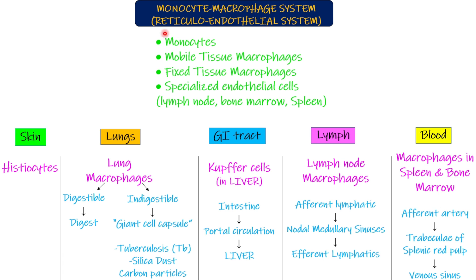This is all regarding the monocyte macrophage system, also known as the reticuloendothelial system — a whole system of macrophages, monocytes, and specialized endothelial cells preventing the body from infections. Macrophages are located in the skin as histiocytes, in the lungs as lung macrophages, in the GI tract as Kupffer cells, in the lymphatic system within lymph nodes, and in the blood primarily within the spleen, which cleans the blood. See you in the next part.